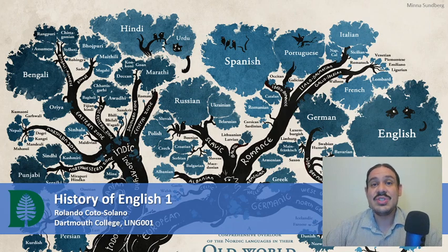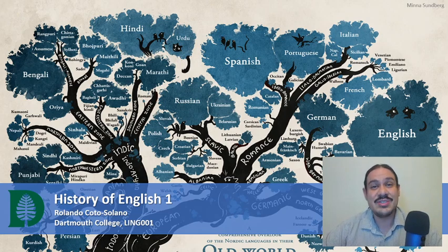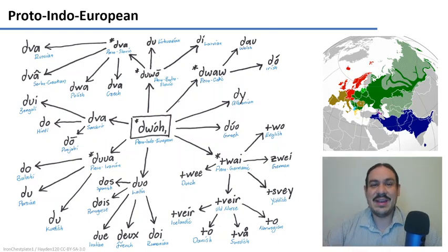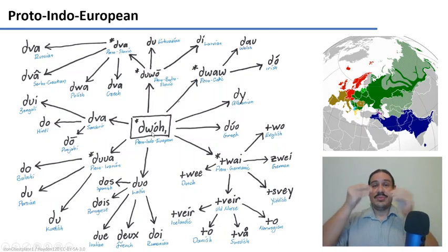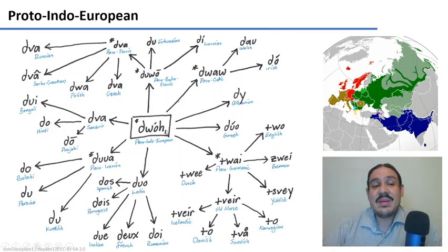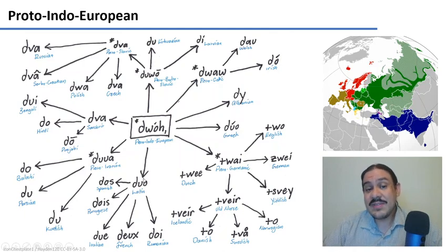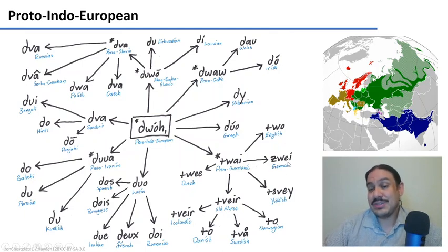In the last video we started studying language change. Let's take a look at a specific example and look at how English has changed over its history. English is an Indo-European language, meaning it's a member of the Indo-European family of languages. The Indo-European family includes major branches like Slavic, which has languages like Russian and Polish; Indo-Aryan, which includes Hindi and Punjabi; Iranian, which includes Persian; the Romance family with French and Spanish; and the Germanic family with languages like English, German, and Dutch.